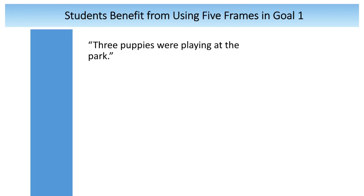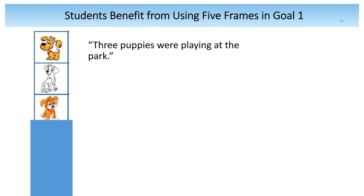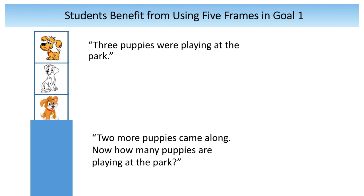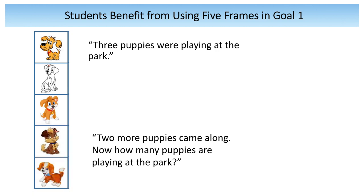For instance, it could look like this: there were 3 puppies playing at the park — there are the 3 that you and the students could reveal — and 2 more puppies came along. Now, how many puppies are playing at the park? You can give them a signal, like clapping your hands, so that they chorally respond: 5.